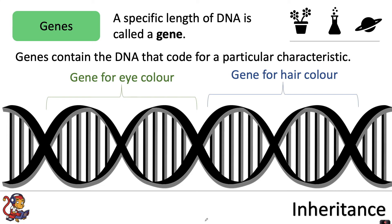Don't forget you get half of your DNA from your mother and half from your father, so you're getting half of your genes from each. Your mother will give you a set of genes for eye colour and your father will give you a set of genes for eye colour, and how those two sets interact will determine what your eye colour will be. The same applies for hair colour — your mother and father each give you a set of genes for hair colour, and how those genes interact determines your hair colour.